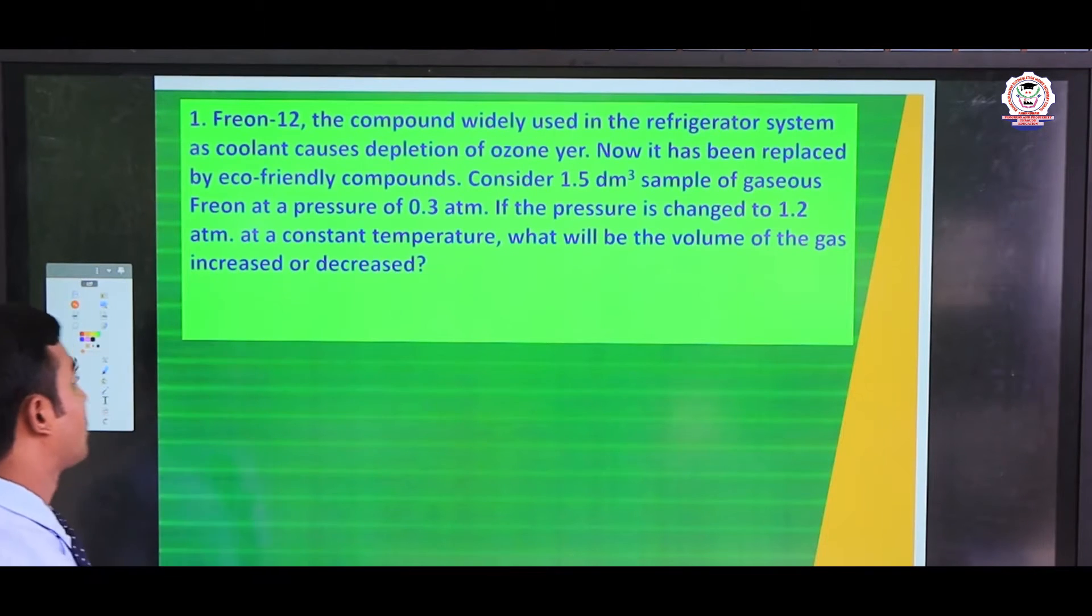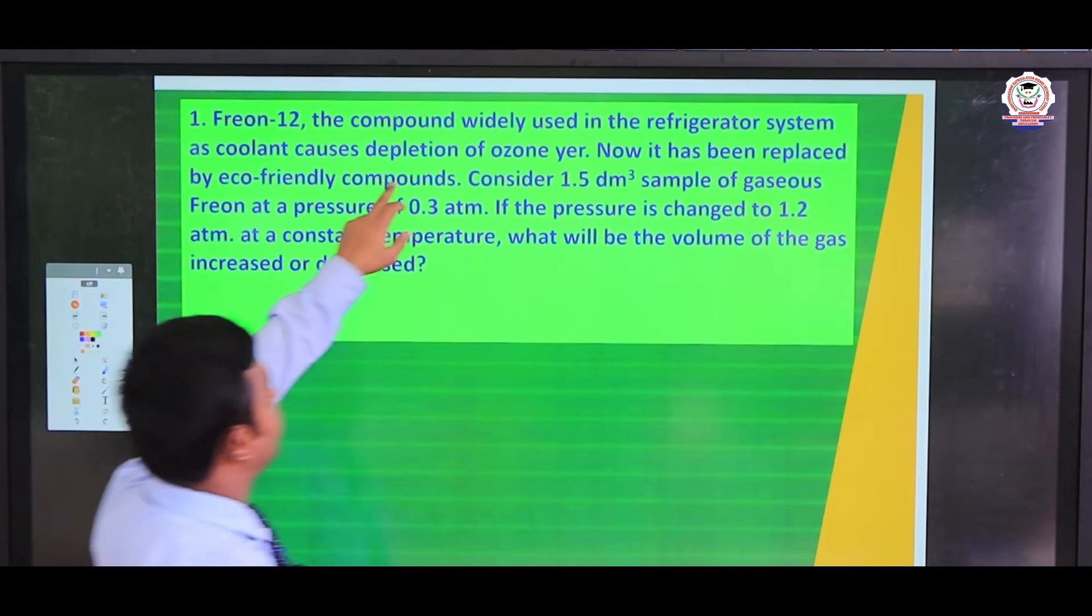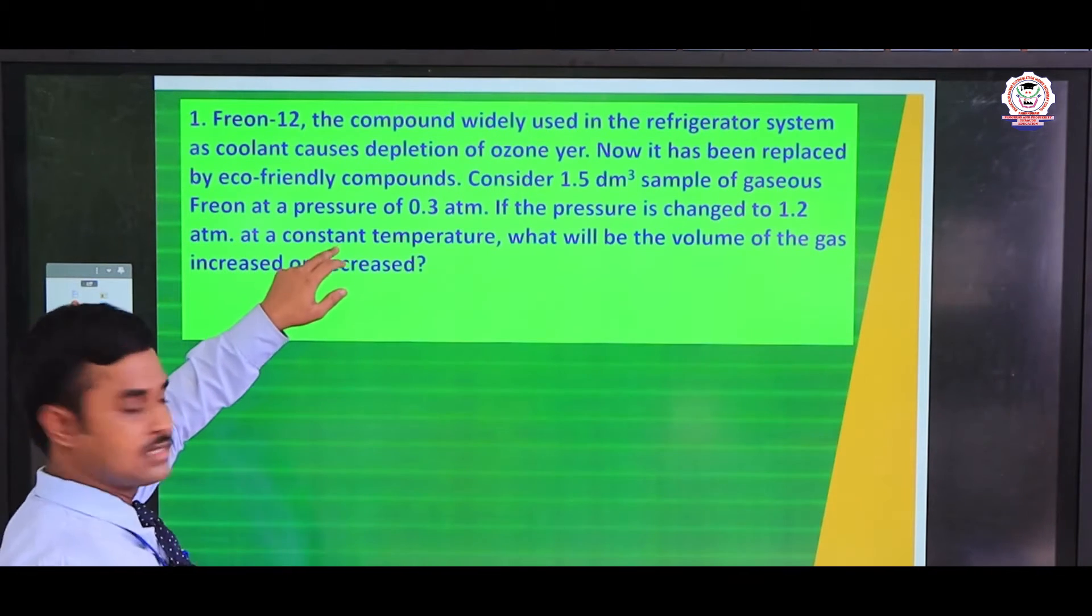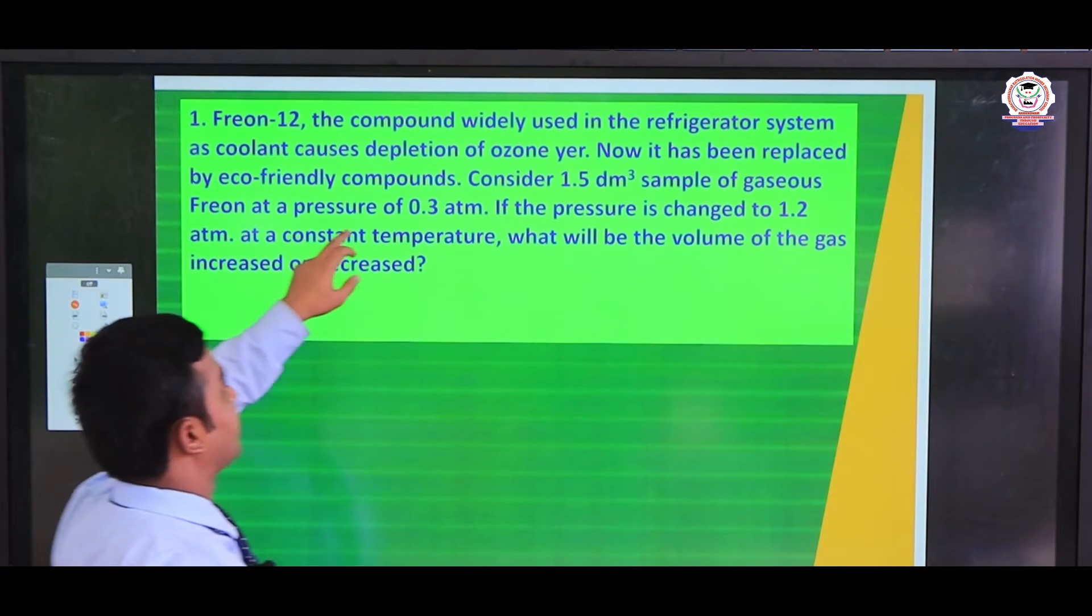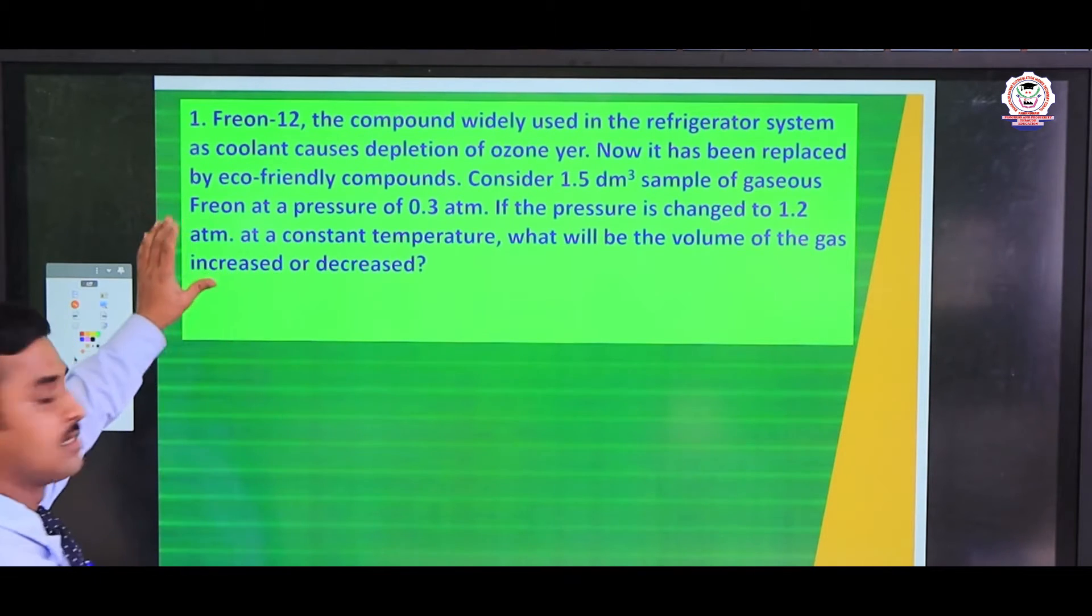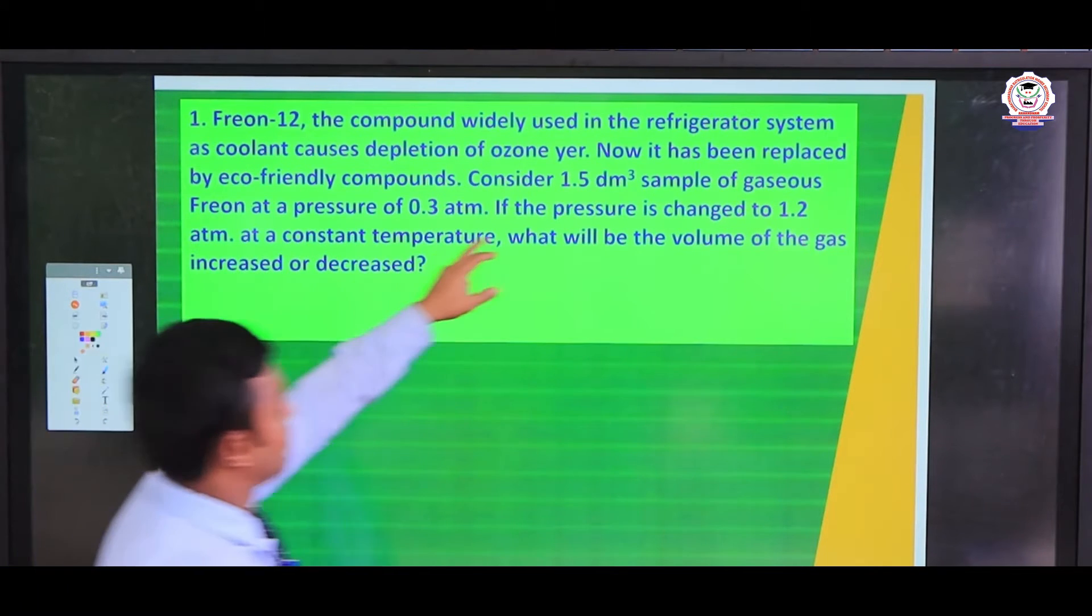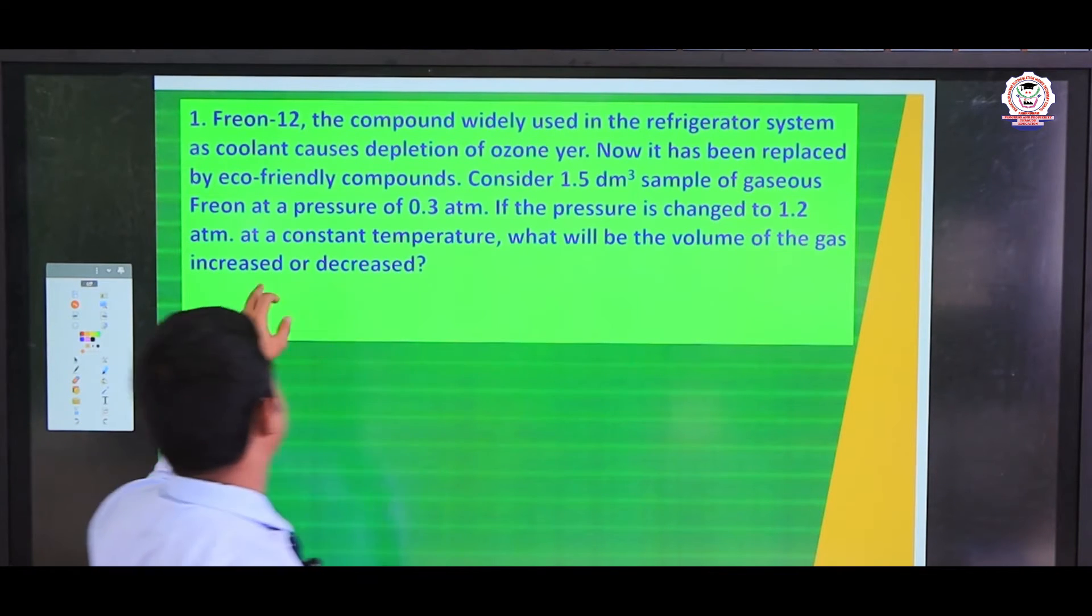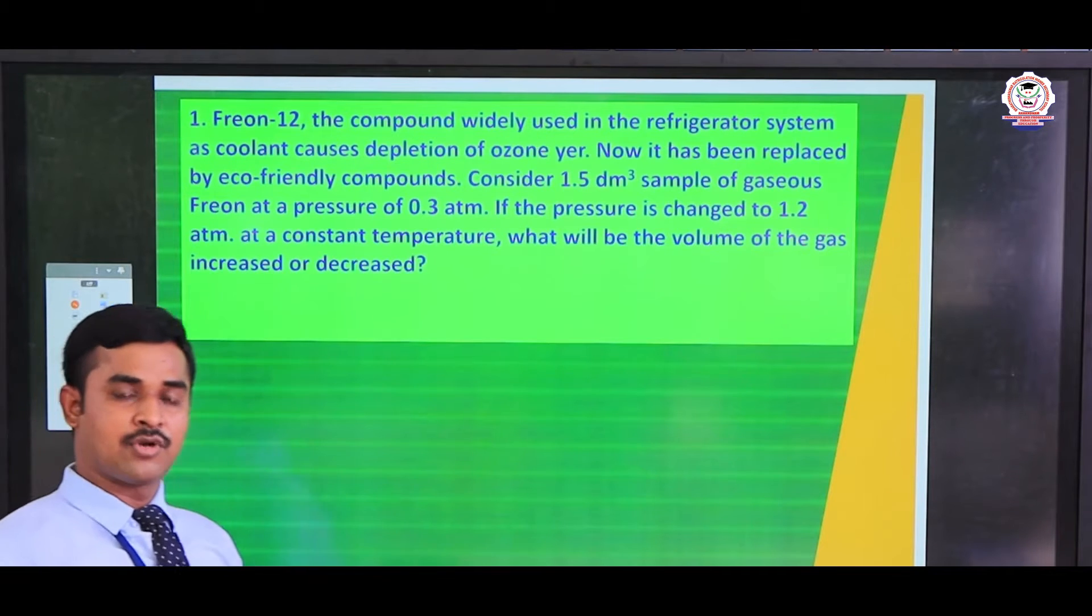We see the first problem. Freon-12, the compound widely used in the refrigerator system as coolant, causes depletion of ozone layer. Now it has been replaced by eco-friendly compounds. Consider 1.5 dm³ sample of gaseous Freon at a pressure of 0.3 atm. So here they give the pressure values and volume value for the freon gas. If the pressure is changed to 1.2 atm at constant temperature, what will be the volume of the gas, whether it is increased or decreased?